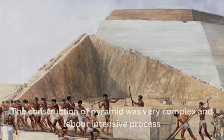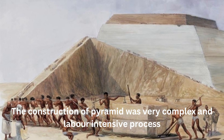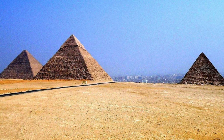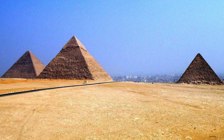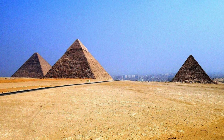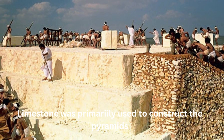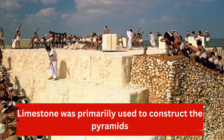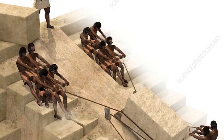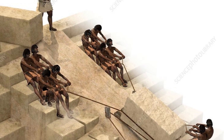The construction of pyramids in ancient Egypt involved a complex and labor-intensive process. Construction started with the selection of a suitable site, typically on the west bank of the Nile River where the sun sets, symbolizing the afterlife. The site was then cleared of vegetation and leveled to create a solid foundation. Limestone was the primary building material, with massive blocks quarried from nearby hills and transported to the building site using sledges, rollers, and possibly barges on the Nile River.